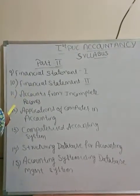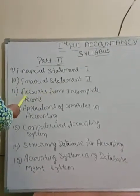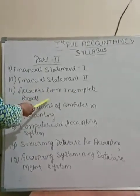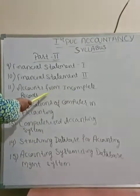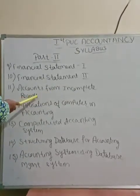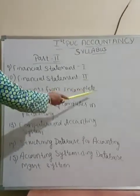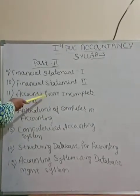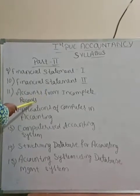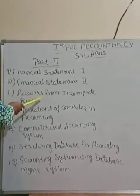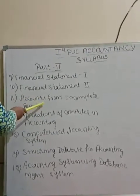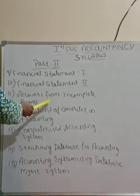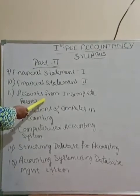Chapter 11 is Accounts from Incomplete Records. Another name for this is the single entry system. Here the sole proprietor or owner maintains incomplete records. Under this single entry system, complete information is not provided.